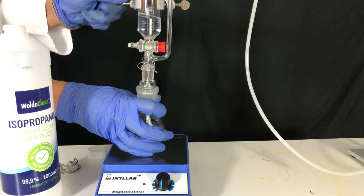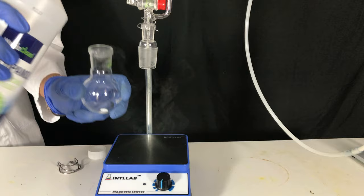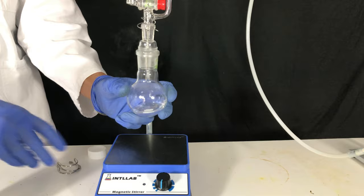Isopropanol was added to a 100 milliliter round bottom flask below the addition funnel. The flask was then clamped in its place.